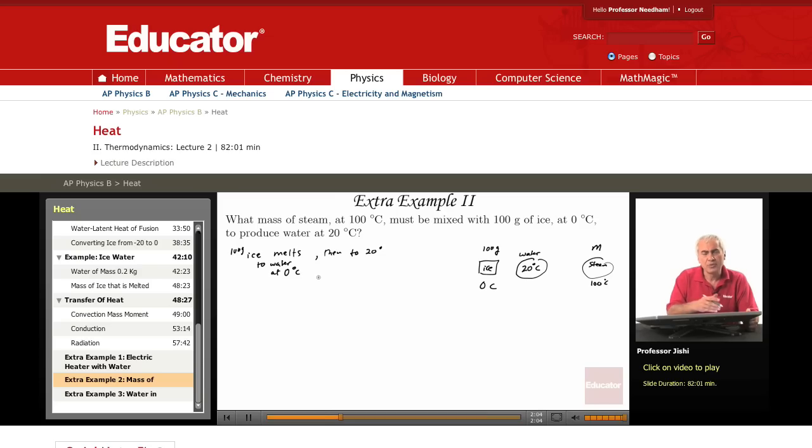So in both processes, in both steps, heat is gained. Ice first gains heat to melt, then the water gains heat to move to 20 degrees.